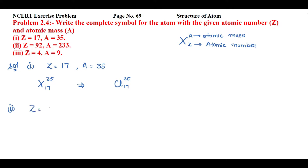The next one: Z equal to 92 and A equal to 233. Atomic number will tell us about the element. Atomic number 92 is of uranium, so I'll mention atomic number 92 as subscript and atomic mass 233 as superscript on the symbol for uranium.